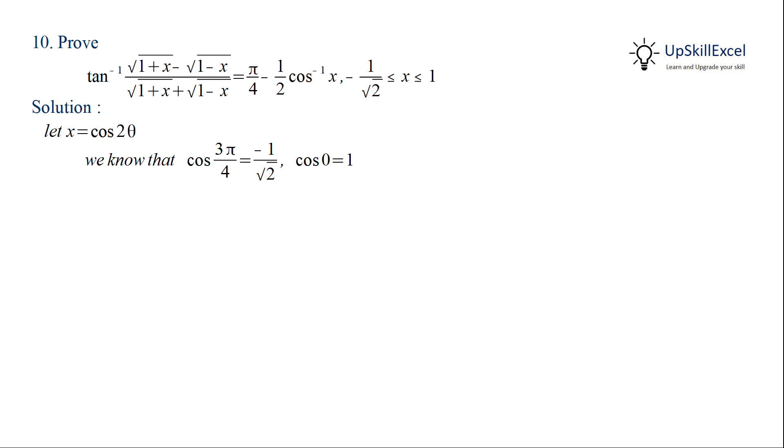The domain of x, which is minus 1 by root 2 to 1, can be written in terms of 2 theta as 0 less than equal to theta less than equal to 3 pi by 4, or 0 less than equal to theta less than equal to 3 pi by 8.